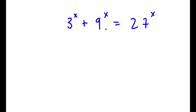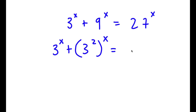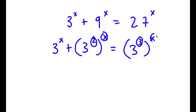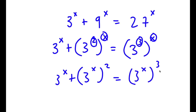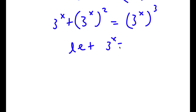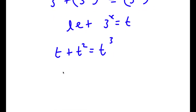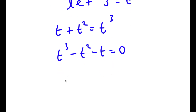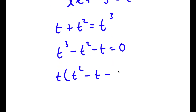In this problem, I have 3 to the power of x plus 9 to the power of x equals 27 to the power of x. I'm going to rewrite 9 as 3 squared and 27 as 3 cubed, giving 3 to the power of x plus 3 to the power of 2x equals 3 to the power of 3x. If I let t equal 3 to the power of x, I have t plus t squared equals t cubed, which rearranges to t cubed minus t squared minus t equals 0. Factoring out t gives t times t squared minus t minus 1 equals 0.